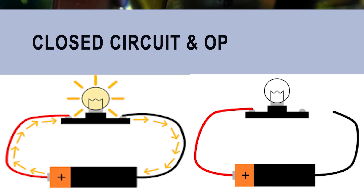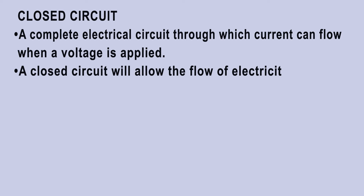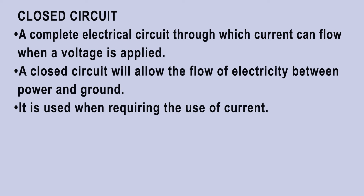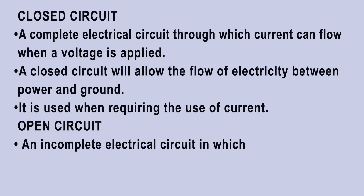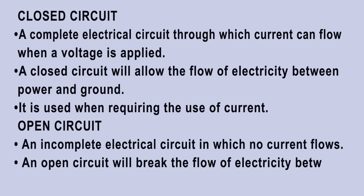Now let us see what a closed circuit and open circuit are. A closed circuit is a complete electrical circuit through which current can flow when a voltage is applied. It allows the flow of electricity between power and ground and is used when requiring the use of current. An open circuit is an incomplete electrical circuit in which no current flows; it breaks the flow of electricity between power and ground.